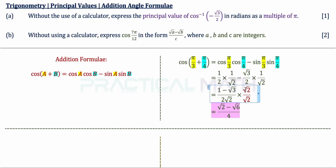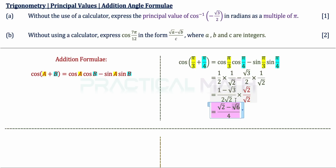After rationalizing: root 2 times 1 gives root 2, root 2 times negative root 3 gives negative root 6, and 2√2 times √2 gives 4. So the answer for part B is (root 2 minus root 6) divided by 4.